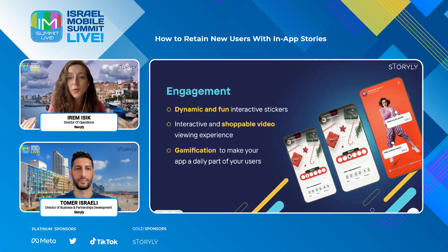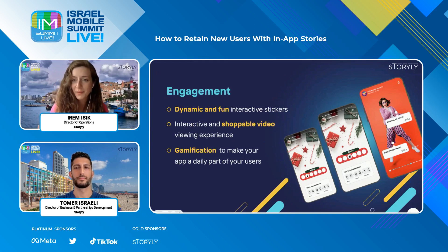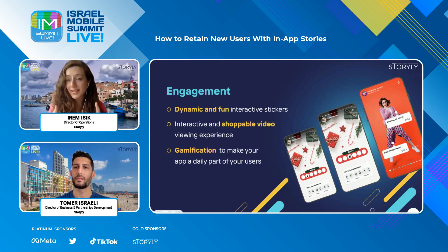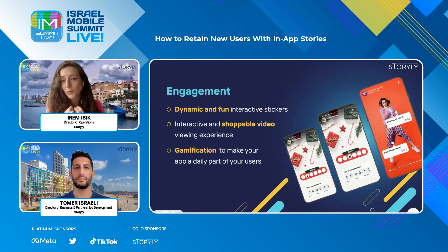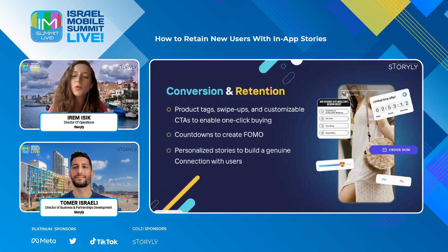As we talked about the blurring lines between different verticals — social apps getting more shopping features and shopping apps getting more social features — bringing in the influencer effect can also boost active engagement. Now you can use stories to get your influencers into your app to interact with your on-demand experience. Imagine an e-commerce platform where an influencer is talking about a product and immediately you can put a call-to-action button or a swipe up. If that influencer is asking about a comparison between two products, you can put a poll and get active engagement from users immediately. The natural next step would be conversion and retention.